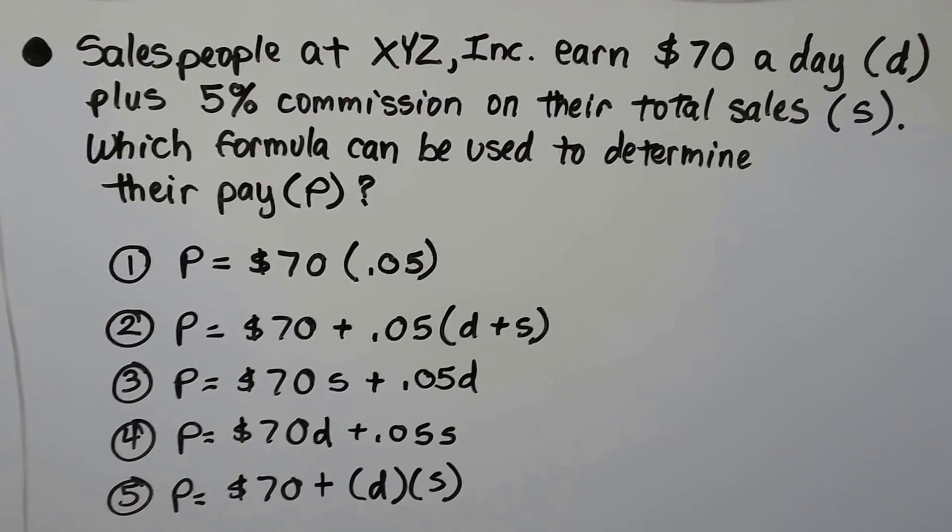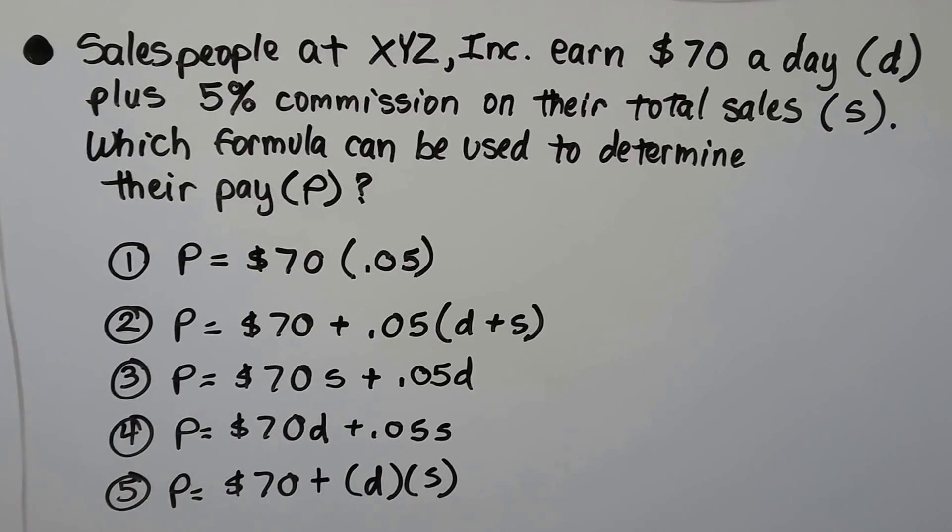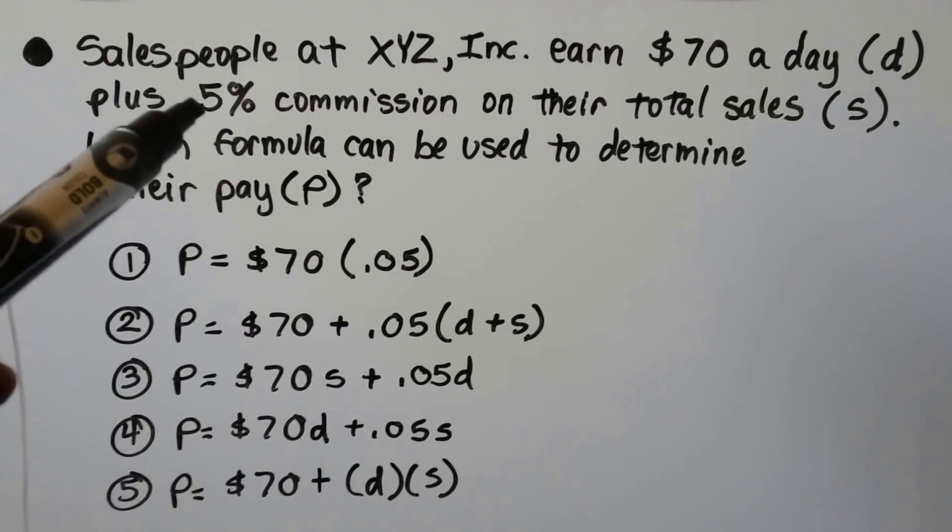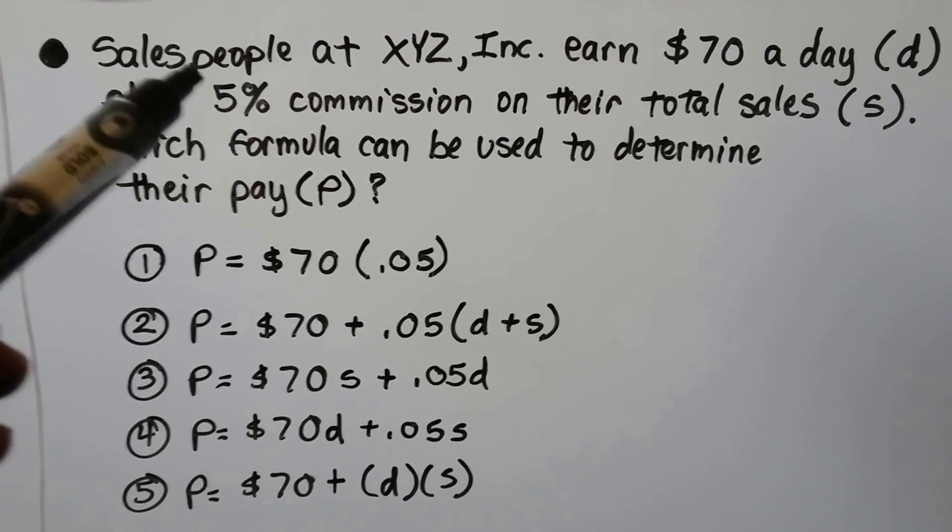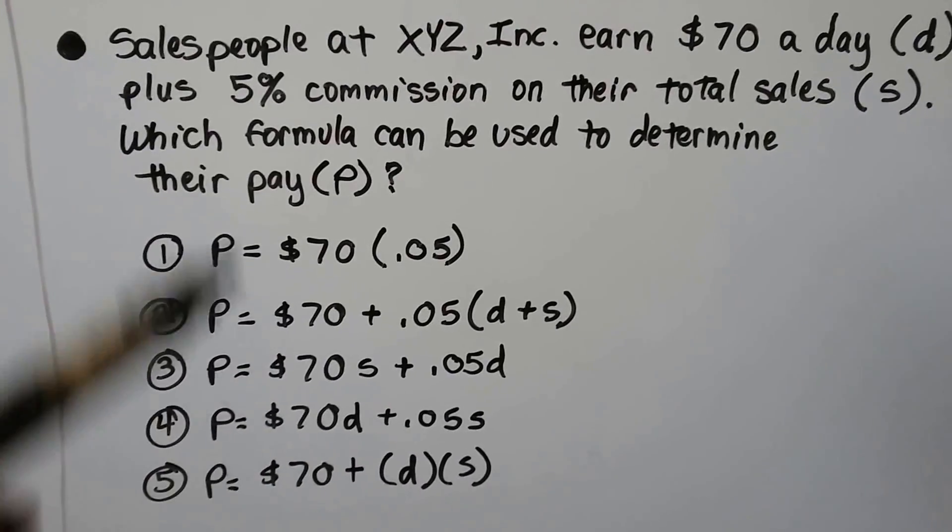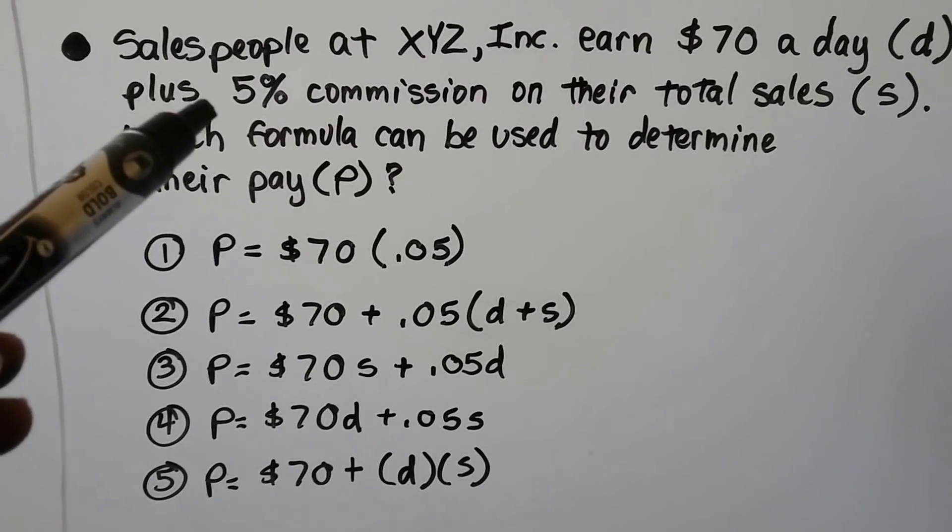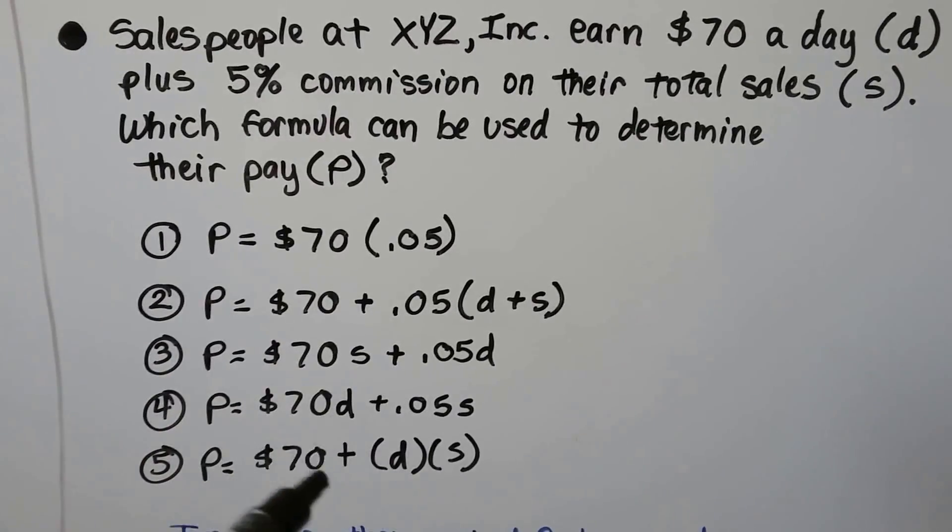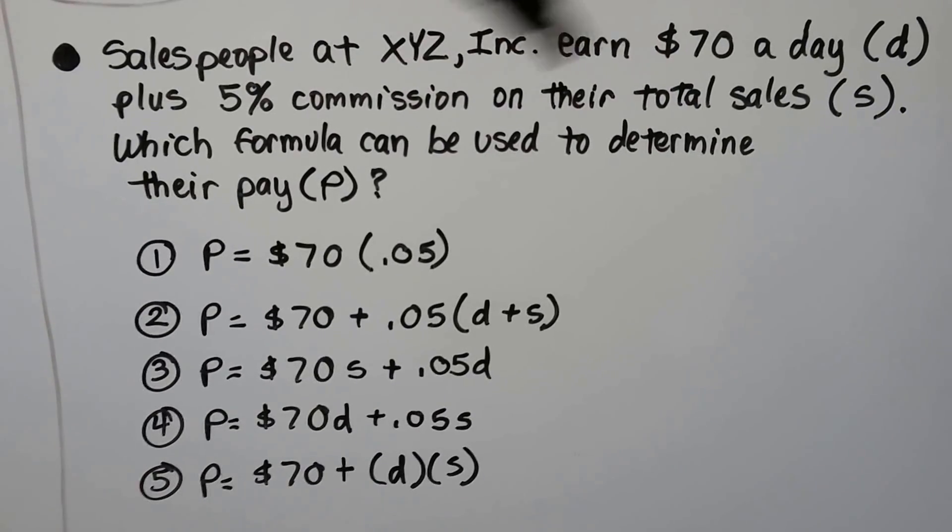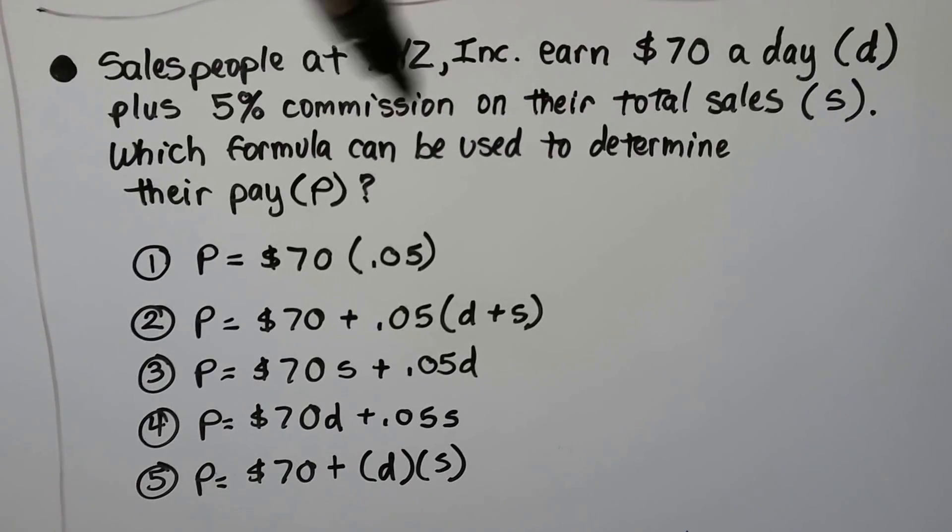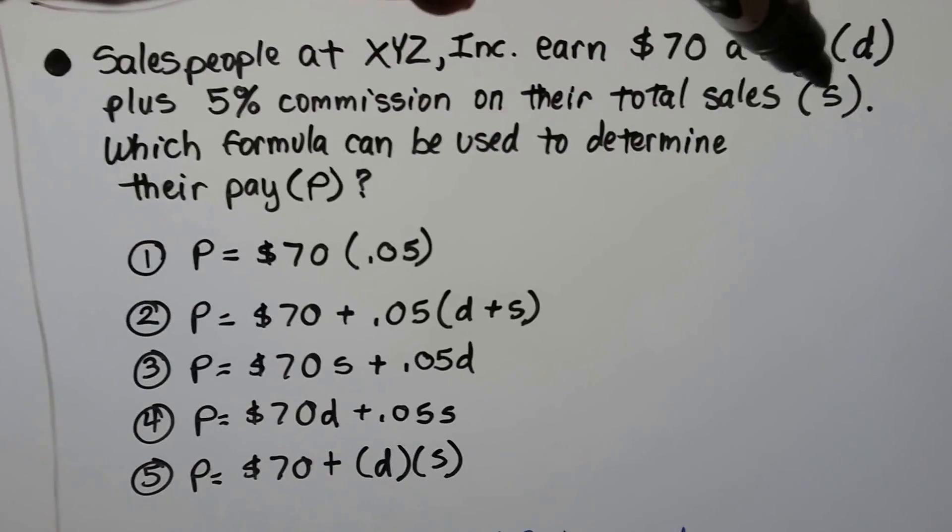Salespeople at XYZ Incorporated earn $70 a day, that's going to be D, plus a 5% commission on their total sales, S, which formula can be used to determine their pay P. Now remember, 5% is .05 as a decimal. We learned that a long time ago in this GED playlist. So it's going to have .05 and we can see .05 in a lot of these. It's $70 a day plus .05 commission on their total sales, S.